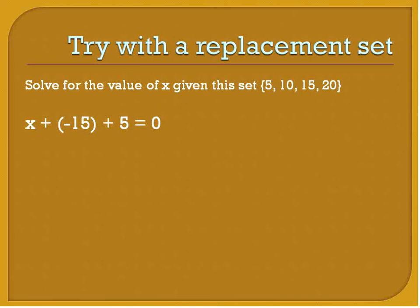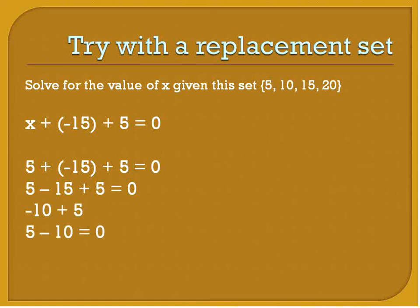A couple more questions. A replacement set, remember we talked about replacement sets in a previous lesson, is a list of numbers that you can substitute in for your variable. So I'm going to start with my first number 5, substitute it into my equation. So I have 5 plus negative 15 plus 5 equals 0. And I'm going to solve it to see if the left side of this equation is actually equal to the right side. 5 plus negative 15 becomes 5 minus 15. 5 minus 15 is negative 10. And then I can switch that around to being 5 minus 10. And 5 minus 10 is negative 5. Clearly not equal to 0.